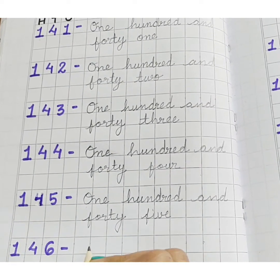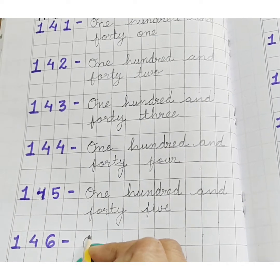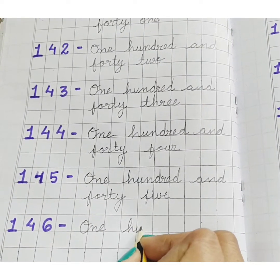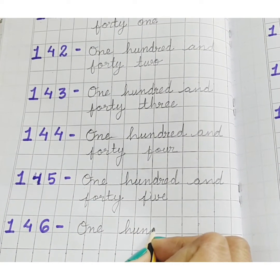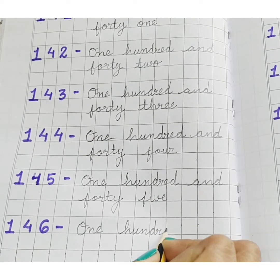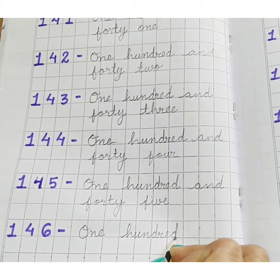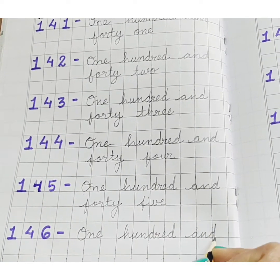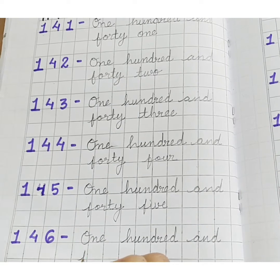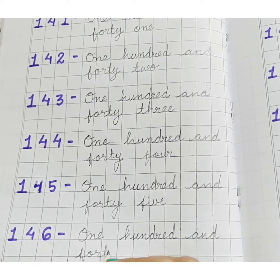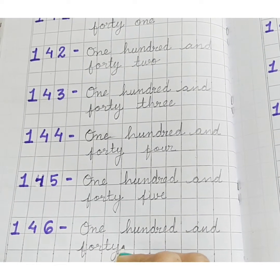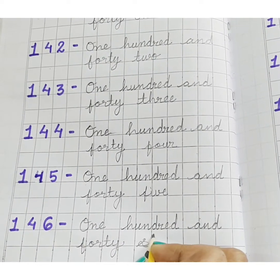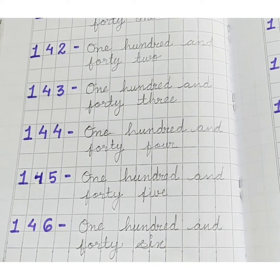ONE HUNDRED. AND F, O, R, T, Y — FORTY. S, I, X — SIX. 6. One Hundred and Forty Six. 146.